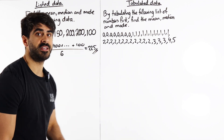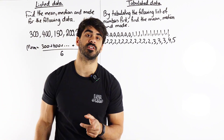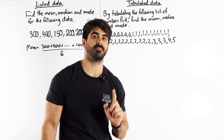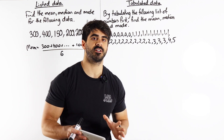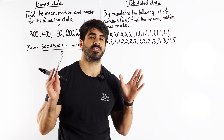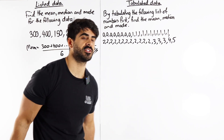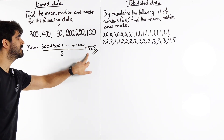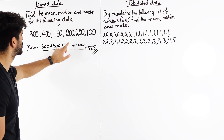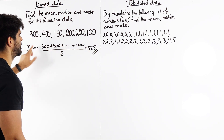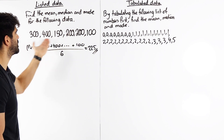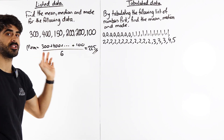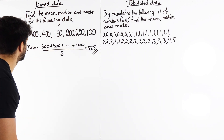This brings us to one of the disadvantages. One of the advantages of the mean is that it considers all the data, but one of the disadvantages is that the mean is very rarely part of your data set. 225 — where do you see 225 in the data? It's not there. So that's a disadvantage.